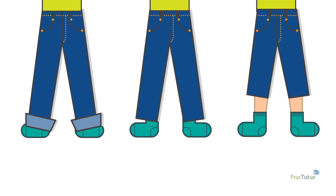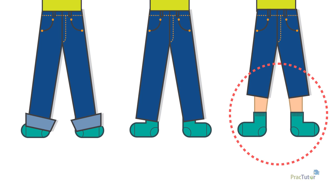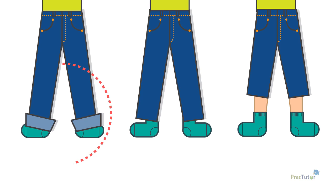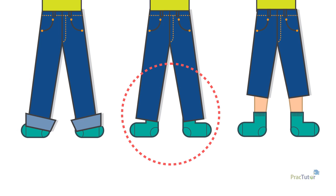The pair of pants that is too small is the shortest. Shortest means that it's not as long as anything else being measured or compared. The pair of pants that drags on the ground is the longest. The longest thing in a group has the biggest length. That leaves the pair that fits in the middle.